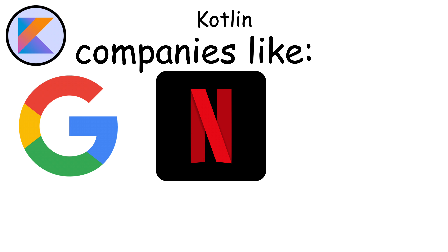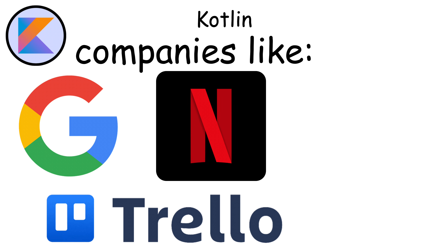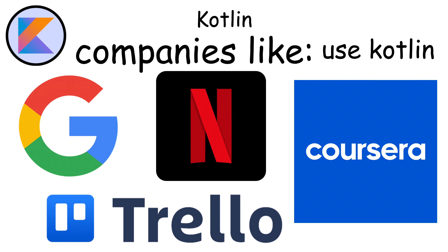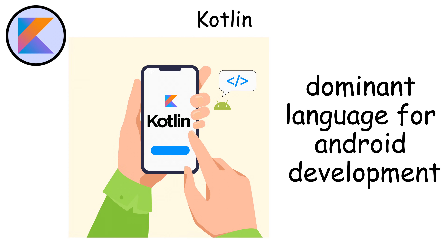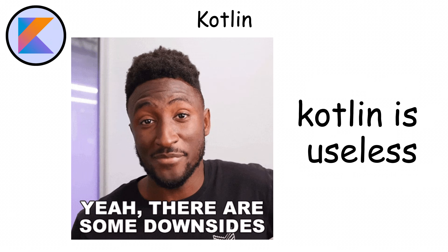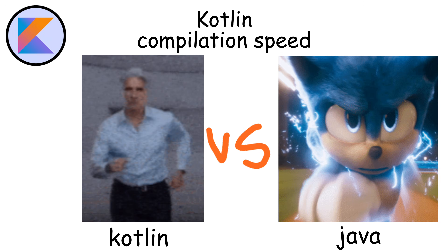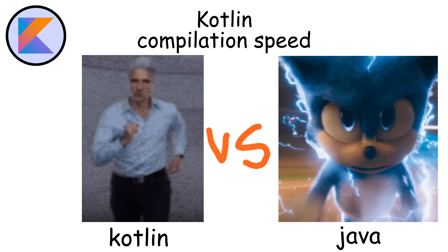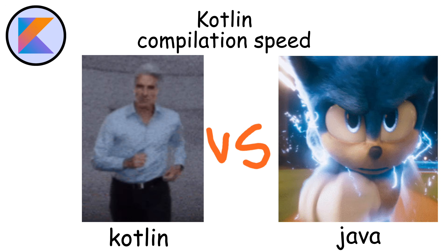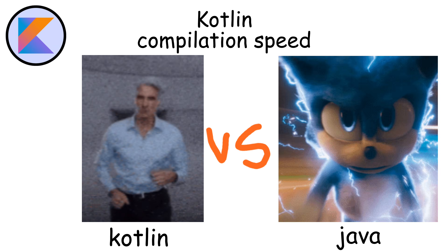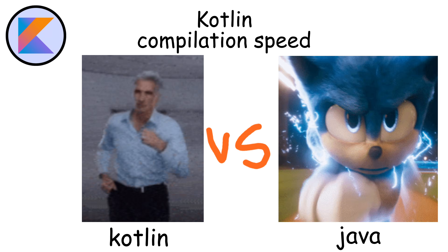Companies like Google, Netflix, Trello, and Coursera use Kotlin, and it's become the dominant language for Android development. However, Kotlin has drawbacks — the compilation speed is slower than Java, which can be frustrating during development.